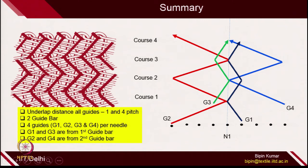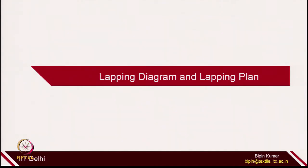Drawing these loops is really, really difficult. Instead of drawing actual fabrics, if we can simply draw lines or express the movement of overlap and underlap in terms of numbers, that will be more than sufficient to explain the fabric structure. In warp knitted fabric notation, we usually follow the movement of guides and denote their overlap and underlap movements in terms of numbers. Those diagrams and numbers are represented by the lapping diagram and lapping plan.